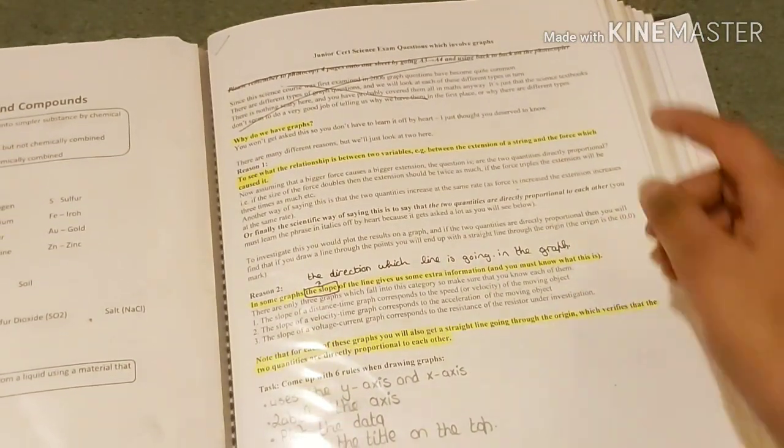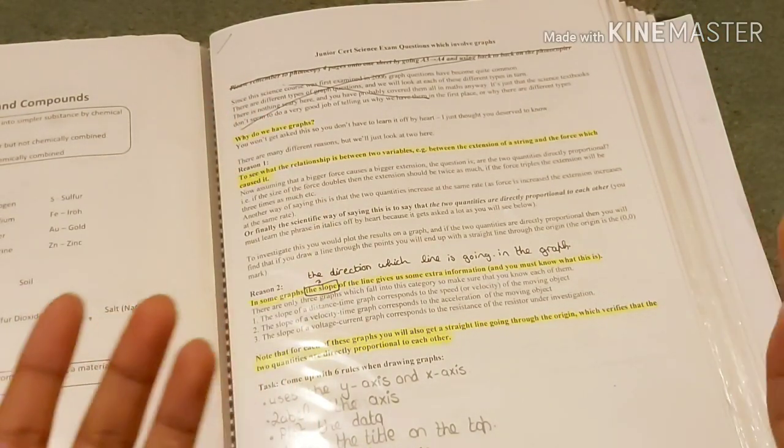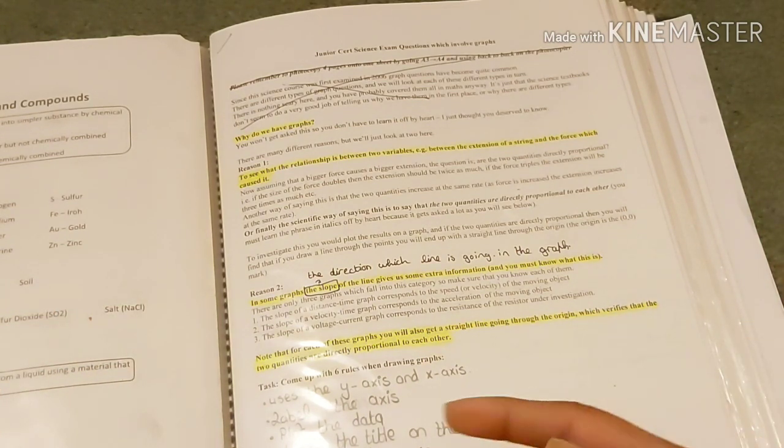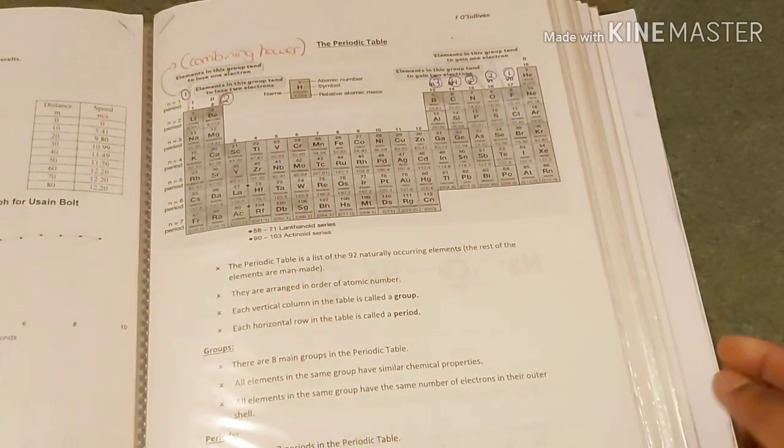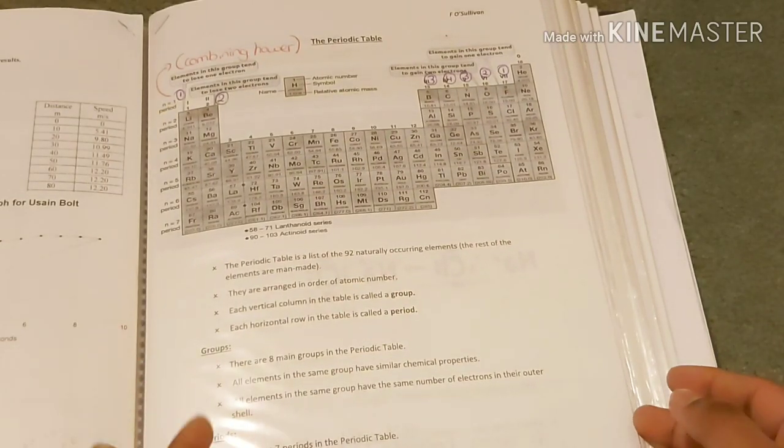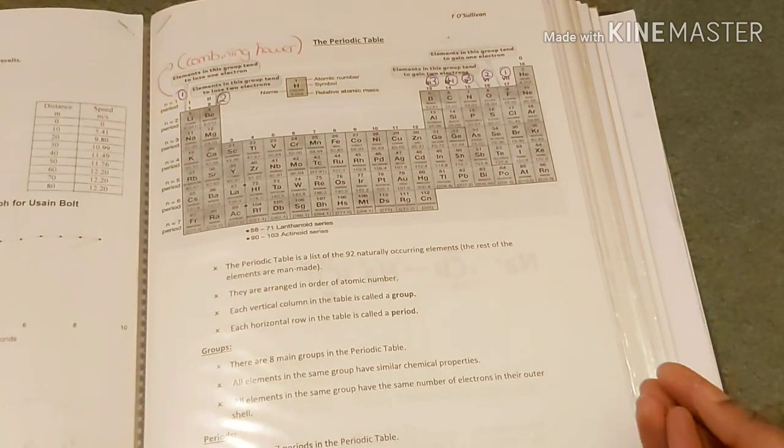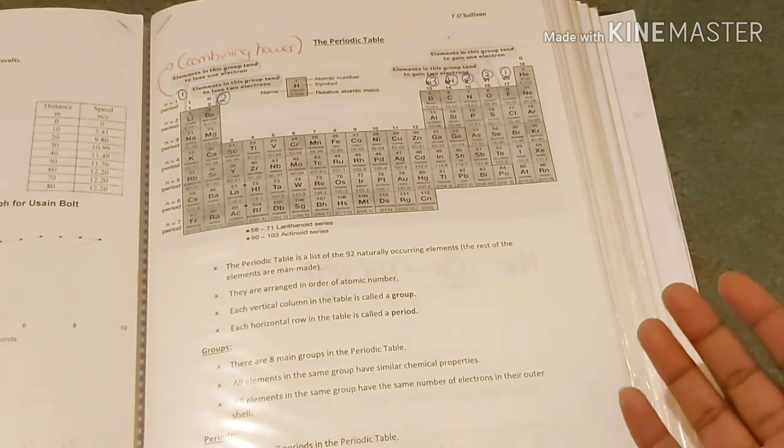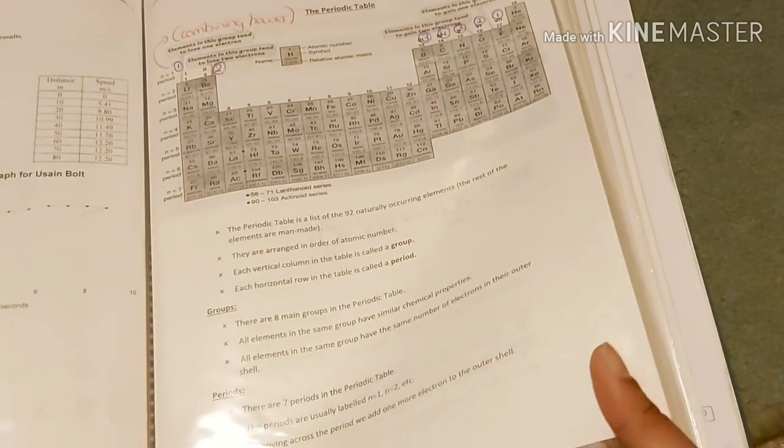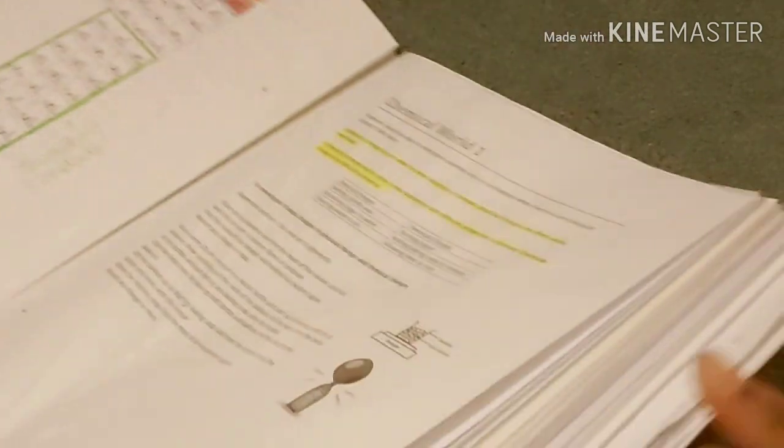This is a junior certificate science exam questions which involves graphs - that's just a practice one. It shows the directions and here we have the periodic table, the most important in science. The periodic table shows all the elements and compounds, all the metals, non-metals, transition metals - it's just countless I guess.